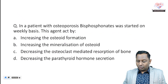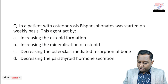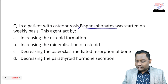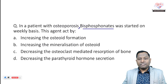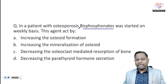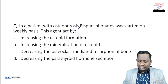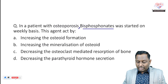The first question is about a patient with osteoporosis where a bisphosphonate was started on a weekly basis. The question asks how this agent acts. Options include: increasing osteoid formation, increasing mineralization of osteo, decreasing osteoclast-mediated resorption of bone, or decreasing parathyroid hormone secretion.